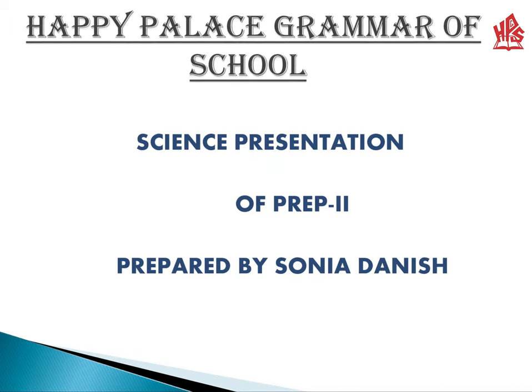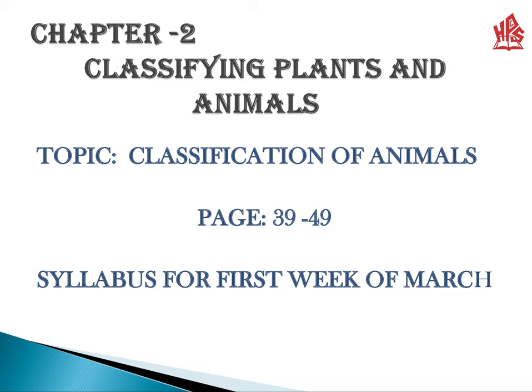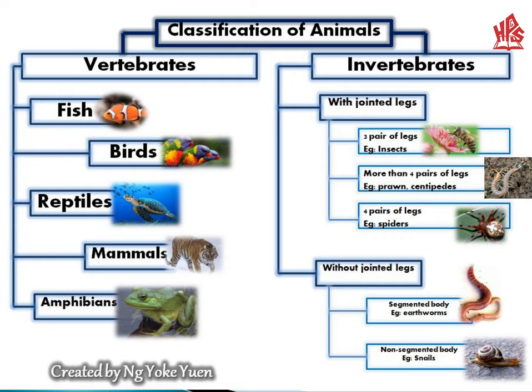Assalamu alaikum, welcome to our digital tutorial. In this presentation we are going to discuss Chapter 2: Classifying Plants and Animals. Our topic will be classification of animals, from page number 39 to page number 49. Classification of animals can be further divided into two parts: vertebrates and invertebrates.